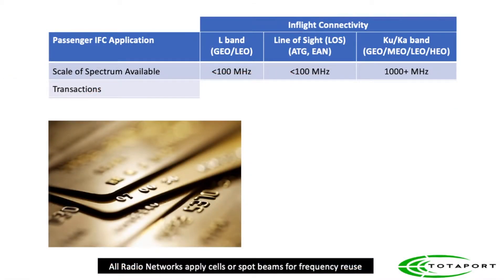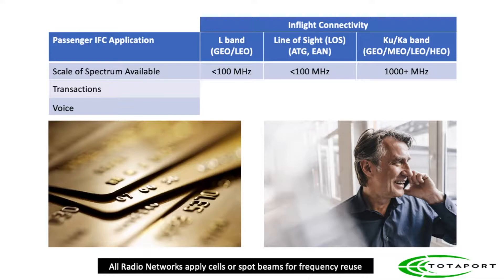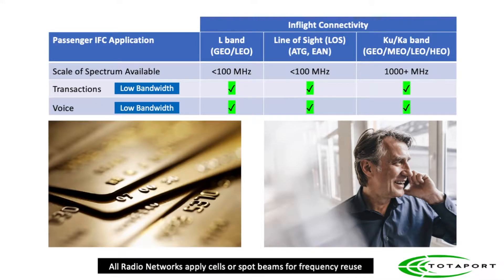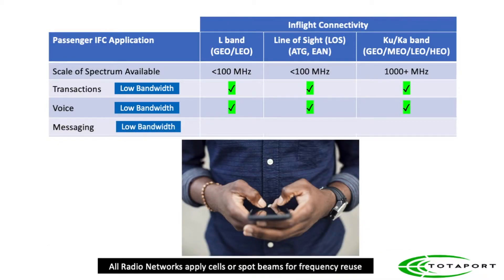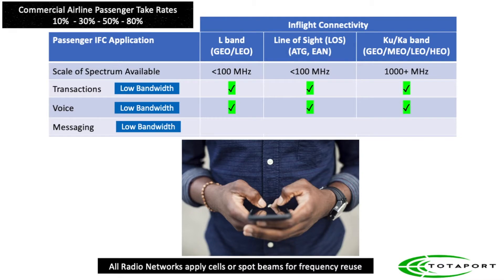Credit card transactions and voice services are low-bandwidth applications, and all radio systems are well-suited for either. While passenger messaging is also a low-bandwidth application, demand depends on how many passengers are using it. The very first IFC passenger messaging application used L-band — that was Tenzing in the year 2000, 20 years ago — but today it's not recommended.